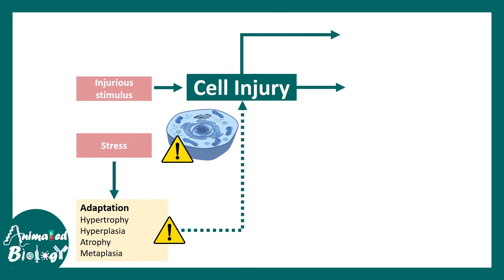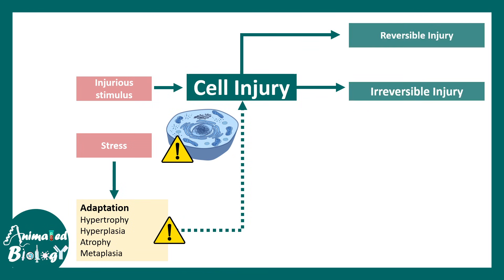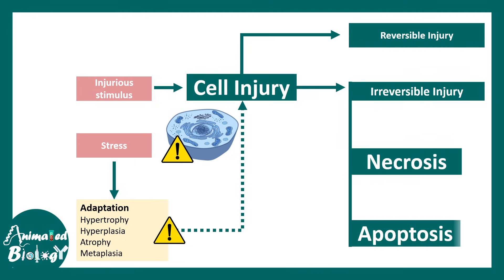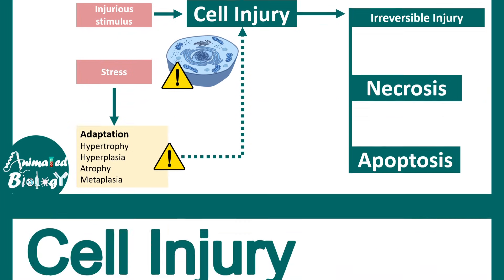There are two kinds of cell injury: irreversible and reversible. In case of irreversible cell injury, the outcomes are apoptosis or necrosis — that means ultimately the death of the cell. These are extreme outcomes. But in reversible injury, there could be repair and the cell can get back to normal in most cases.